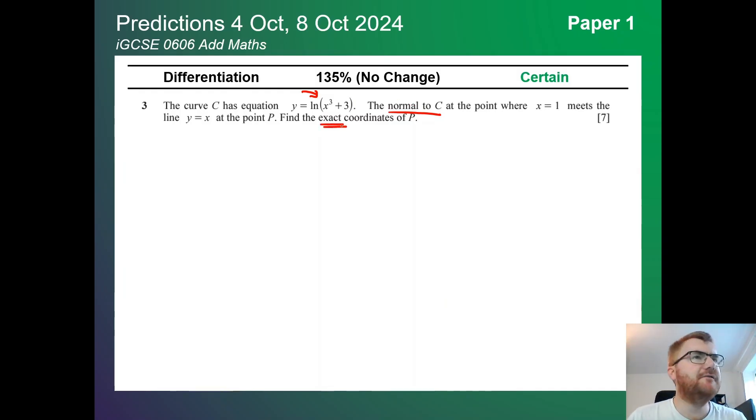Notice this is a key word. I had a request for a video on those trigger words. This should be a trigger word for you as well. As soon as you see exact coordinates you usually need to write this in terms of natural log or possibly e. You're not looking for a decimal answer but something very precise.